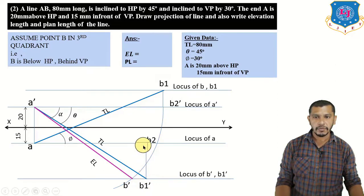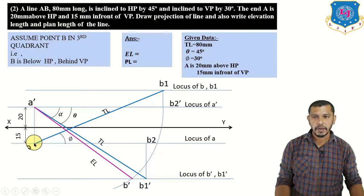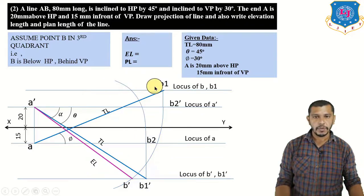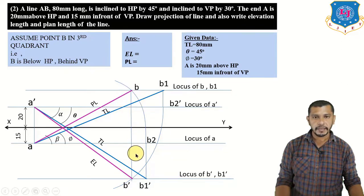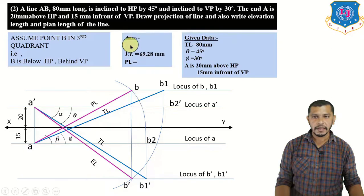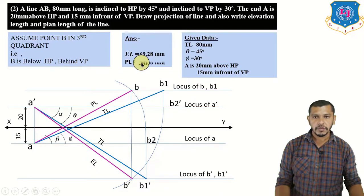To find the plan length: draw a straight line from b1-dash to the locus of a to get b2, so ab2 is the plan length. Measure ab2 as arc length, take center at a, and give an arc up to the locus of b to get plan point b. Connect b to a — this is the plan length, angle beta. The elevation length a-dash b-dash equals 69.28 mm, plan length ab equals 56.56 mm, and the distance between projector of A and projector of B is the end projector of the line.